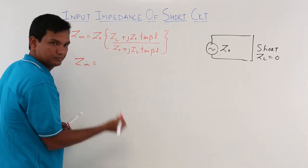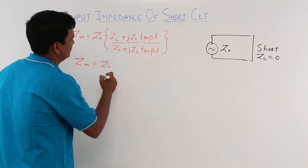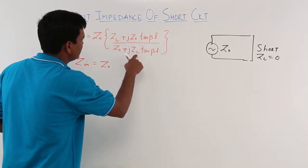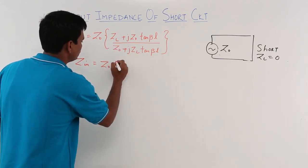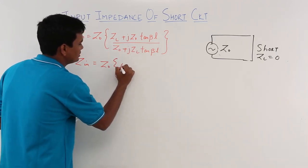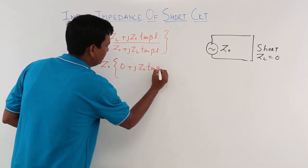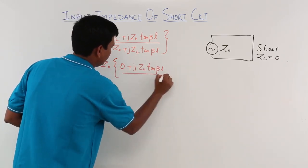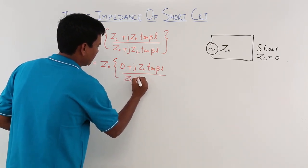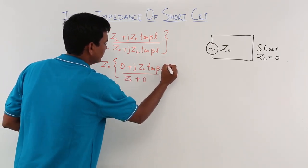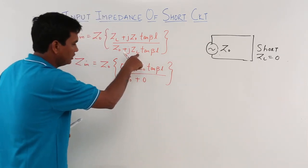Z_in will become Z₀. My ZL is zero, which means this and this quantity will go to zero. It means nothing but zero plus j Z₀ tan βL divided by Z₀ plus zero, which comes out to be this quantity zero.